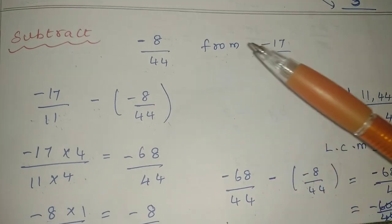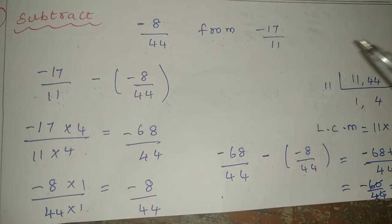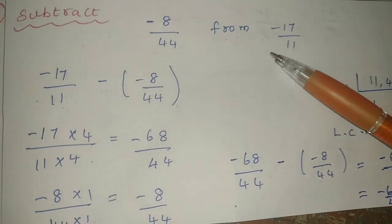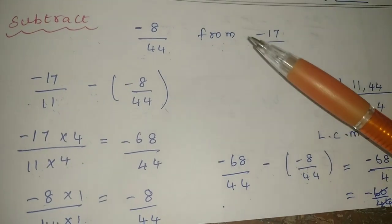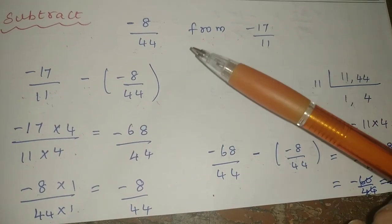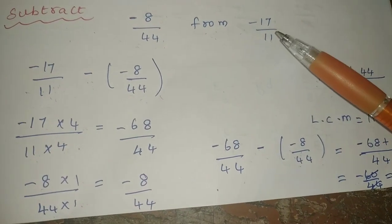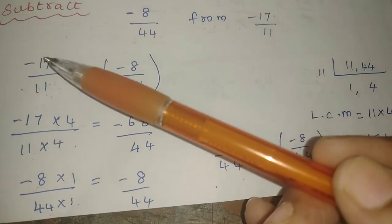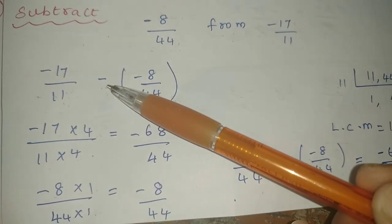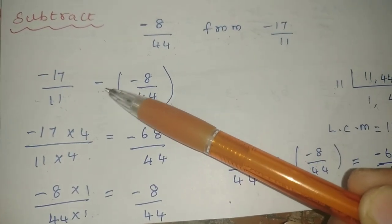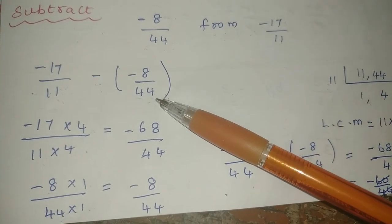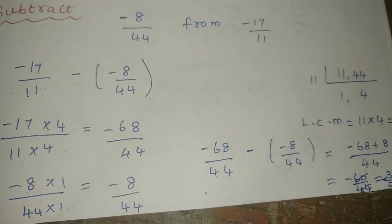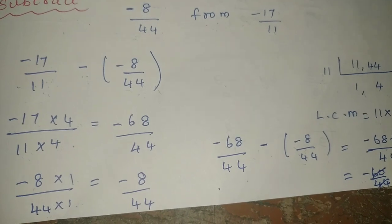The problem is: minus 8 by 44 from minus 7 by 11. So in this sum, it is subtraction. From — the value after 'from' is first, the first value is the second value. So in the present, what are we doing? Minus 7 by 11, subtraction symbol, minus 8 by 44. So in the subtraction, we have a bracket present.